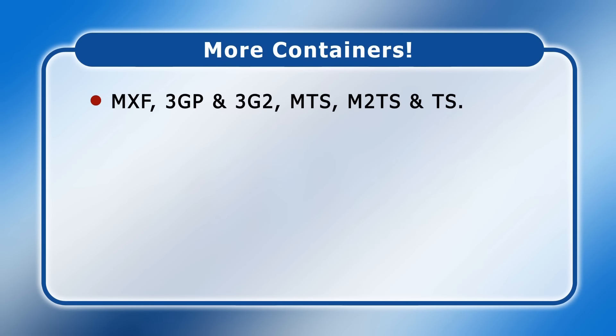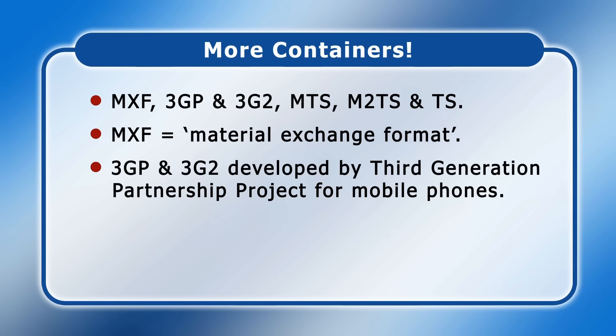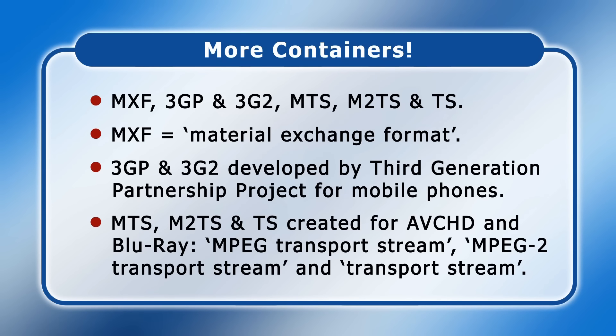More niche containers include MXF, 3GP and 3G2, as well as MTS, M2TS and TS. MXF stands for Material Exchange Format and is a container used in professional video production and distribution. Meanwhile, 3GP and 3G2 are containers developed by the third-generation partnership project for use on mobile phones. Finally, MTS, M2TS and TS were created for the AVCHD video format and Blu-ray discs, and stand for MPEG Transport Stream, MPEG-2 Transport Stream and Transport Stream respectively.